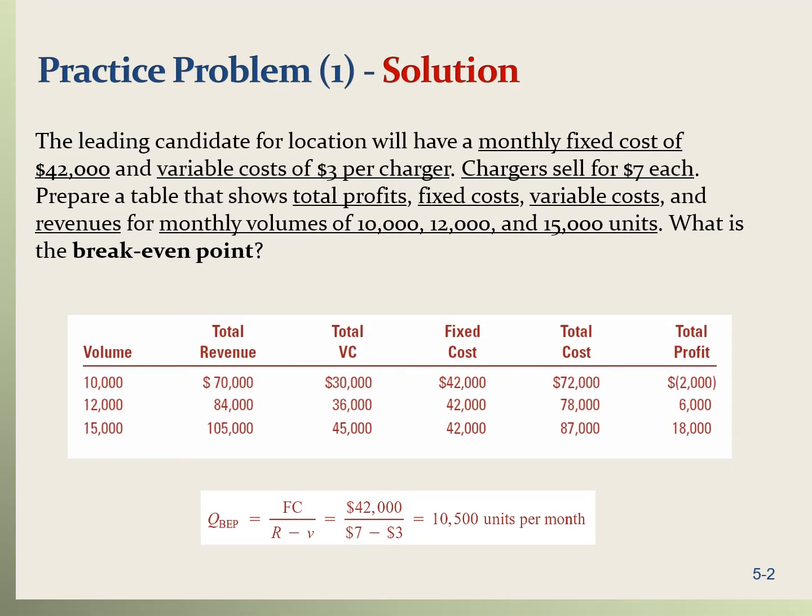Here we try to build the table for this problem. We have to consider three ranges of volume: 10,000, 12,000, and 15,000. Let's start with 10,000. For 10,000, let's compute the total variable cost, fixed cost, and total revenues.